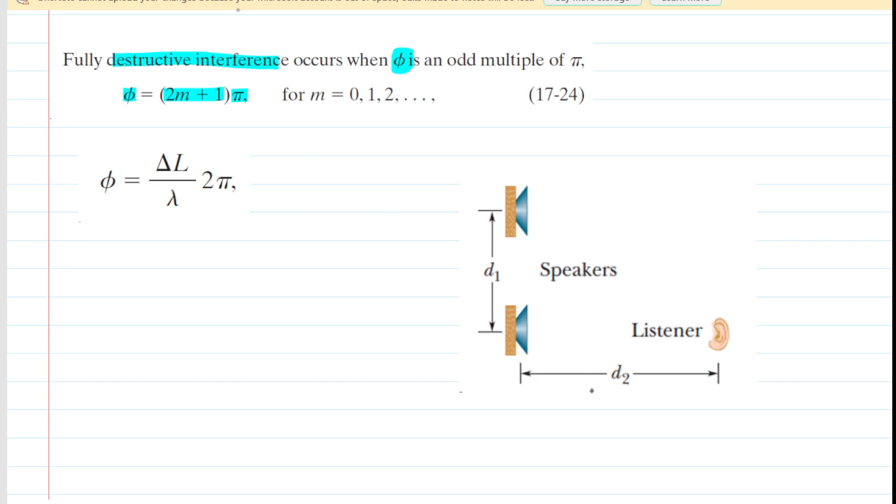If we look at the diagram, we can see that the distance from the lower speaker to the listener is symbolized by D2. But we're going to actually call that L2. So L2 is going to be equivalent to D2. And then we have this other speaker, and we need to figure out an expression for the distance from that speaker to the listener.